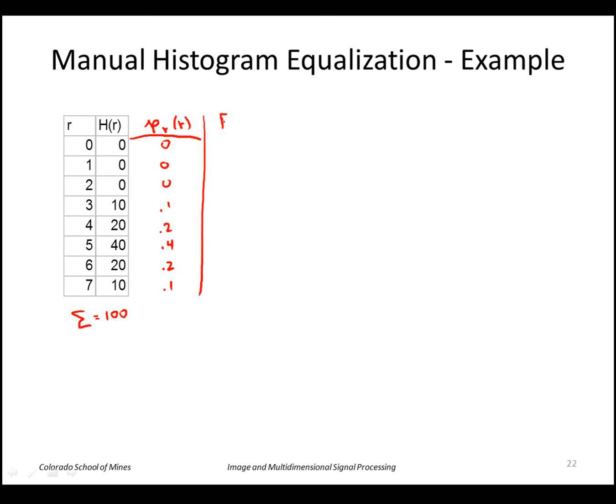The CDF we simply do a cumulative sum so that's 0, 0.1, 0.3, 0.7, 0.9 and 1. We can just multiply by 7 here to get our transformation function.